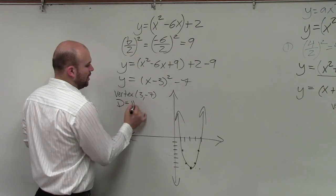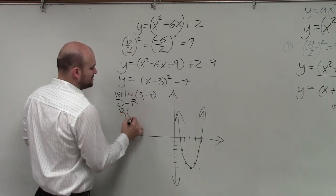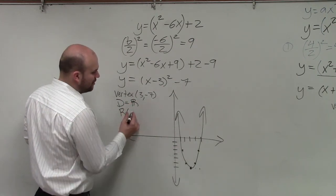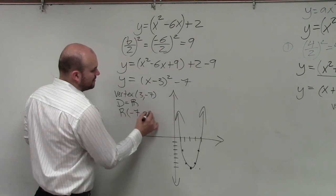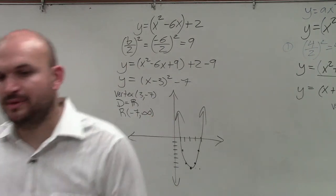And my domain is going to be all real numbers. And my range, I would say, is going to be from the lowest point, which is negative 7, to infinity. And then that would be it.